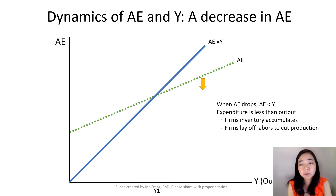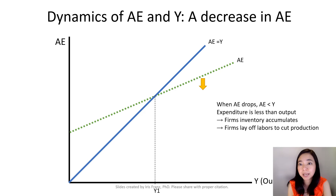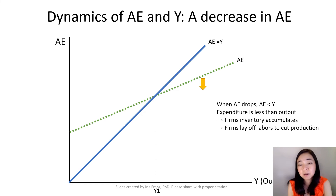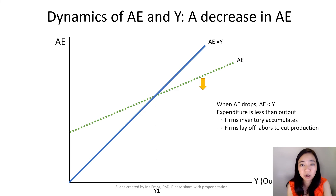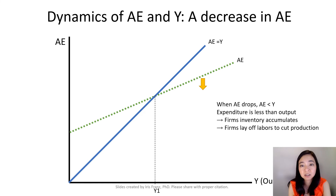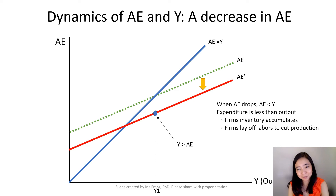Now suppose there is a decrease in the aggregate expenditure — let's say as a result of a government spending cut — then that is going to cause our aggregate expenditure to shift down from this green dotted line to this red line.